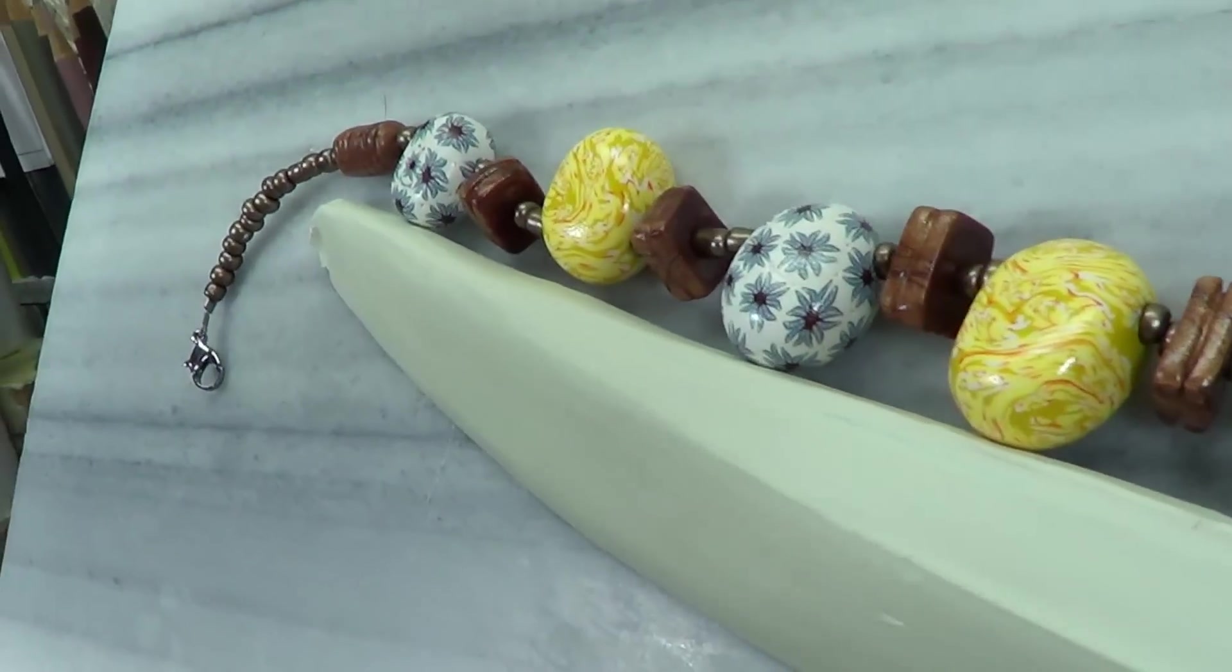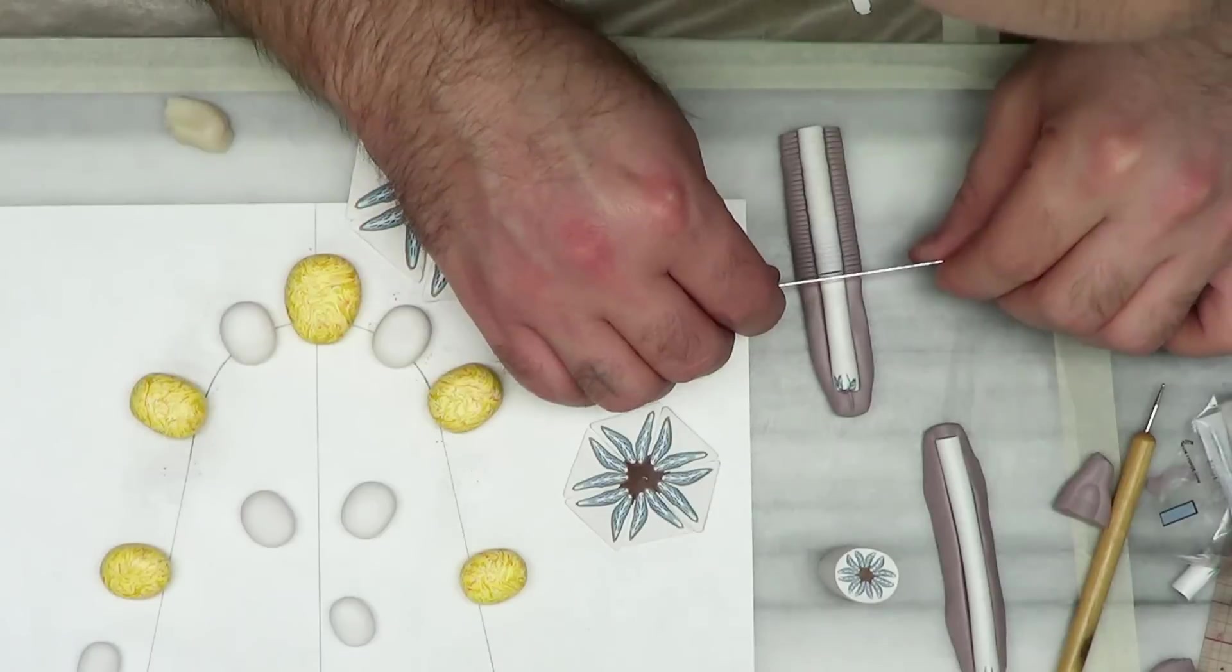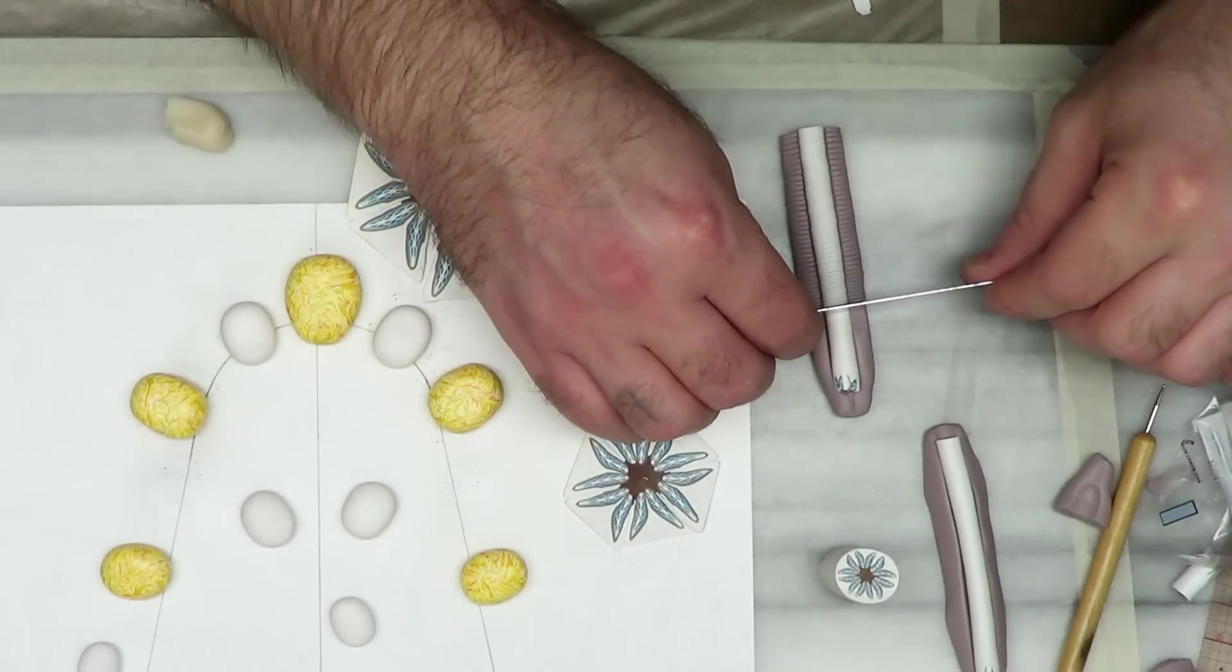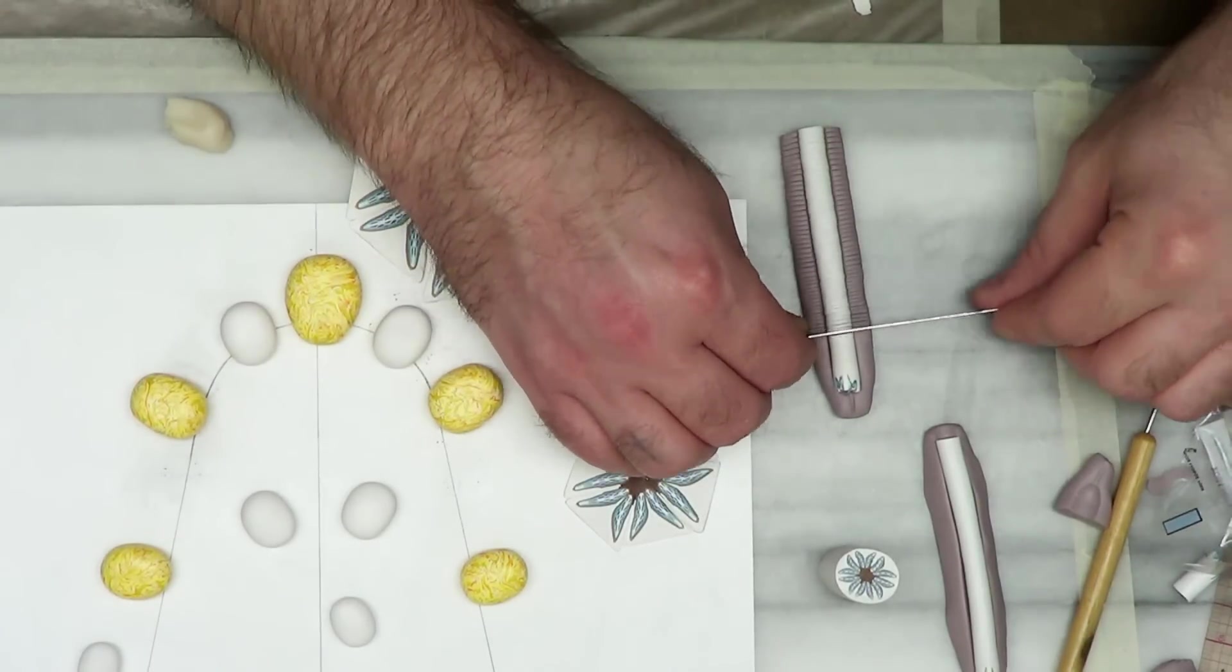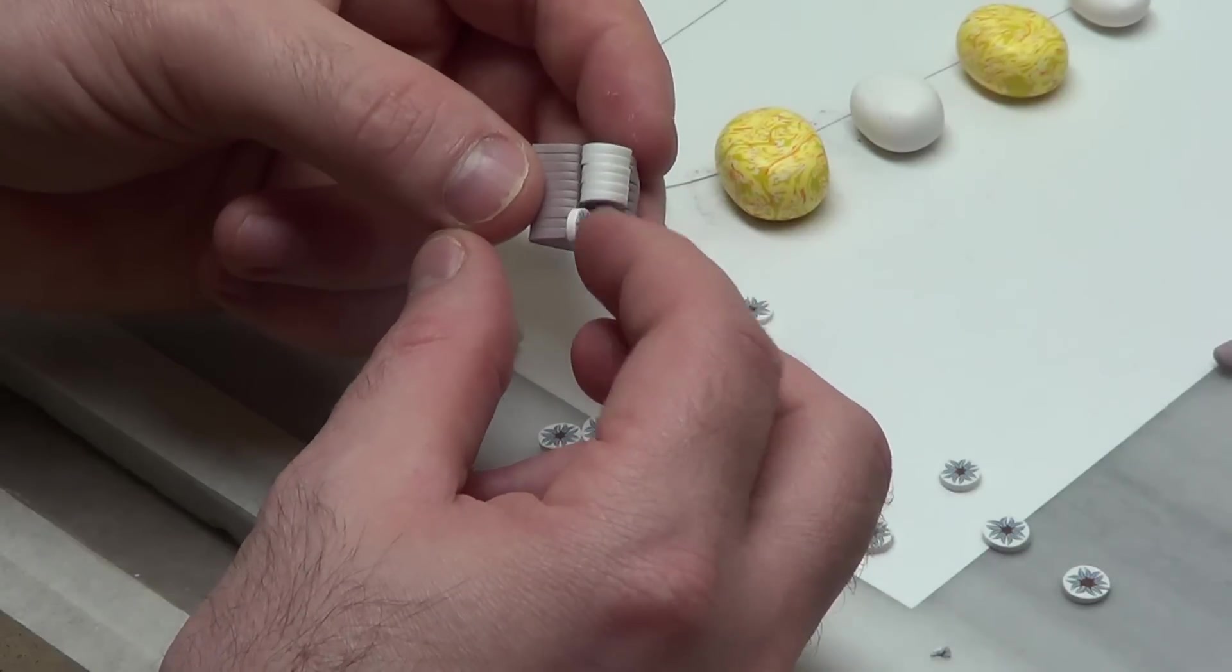I made the blue flower cane using a kaleidoscope technique. Basically you build a big square image and you reduce that into a long cane.